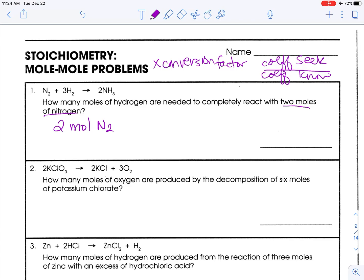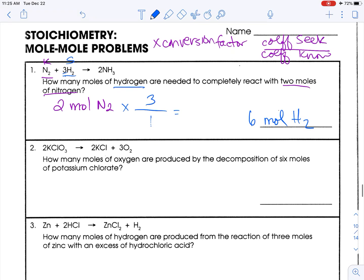And I seek moles of hydrogen. I'm going to multiply by the coefficient of what I seek, which is three, over the coefficient of what I know, which is one. Two times three is six divided by one is six. Our answer is going to be six moles of hydrogen now. The math is pretty straightforward.